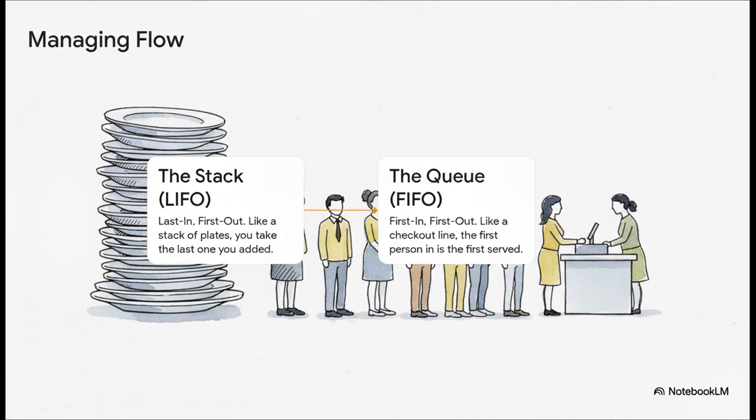First up, you've got the stack. Its rule is last in, first out, or LIFO. Just think of a stack of plates. The last plate you put on top is always the first one you take off. Then you have the queue, which is the exact opposite. It follows a first in, first out rule, or FIFO. Just like a checkout line at the store, the first person who gets in line is the first person to get served.